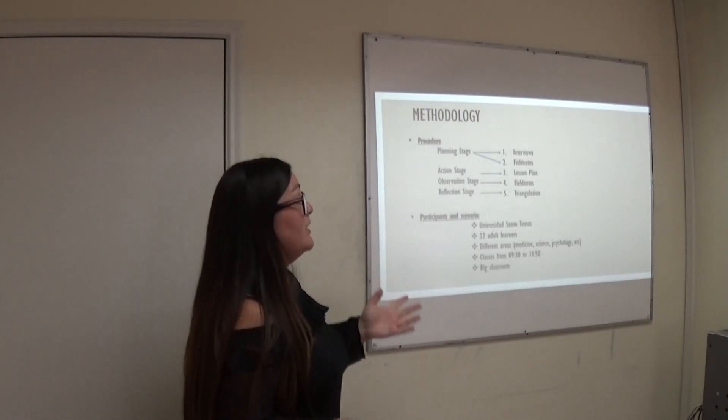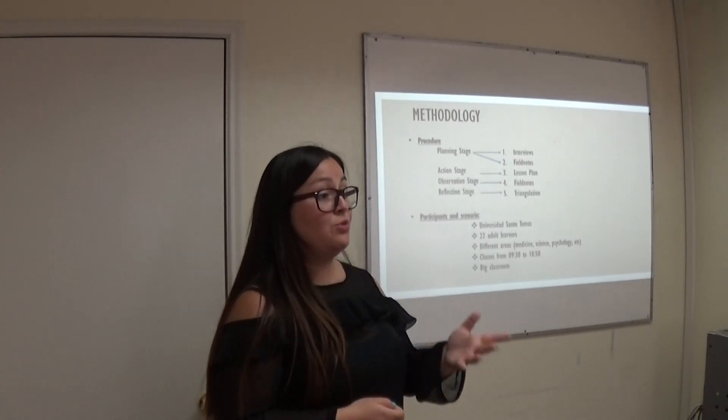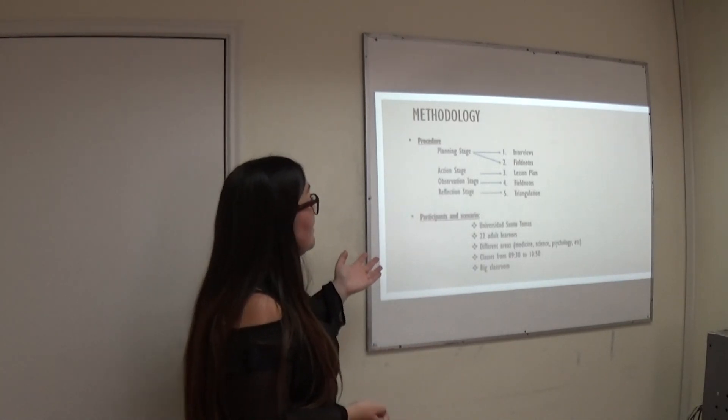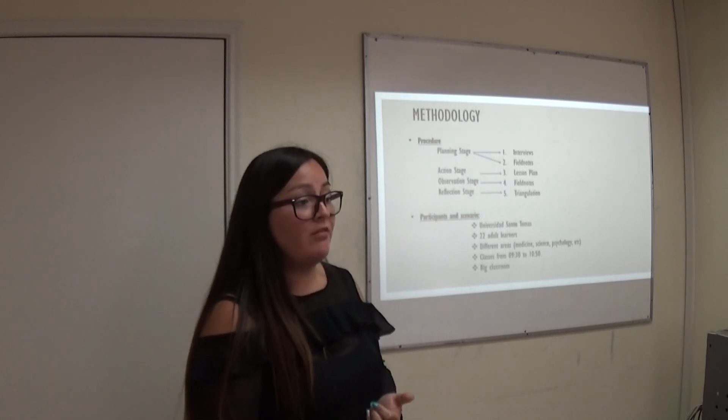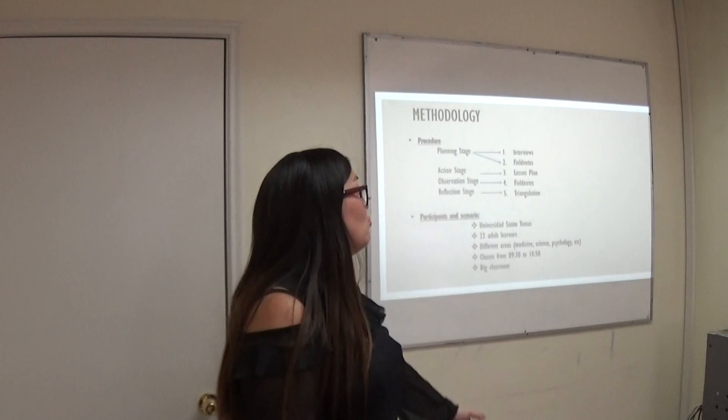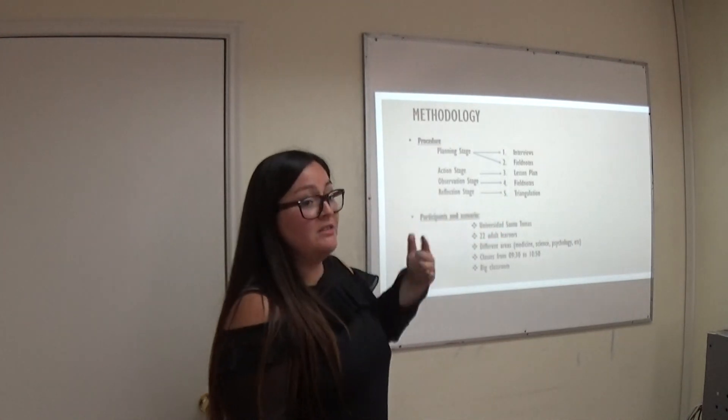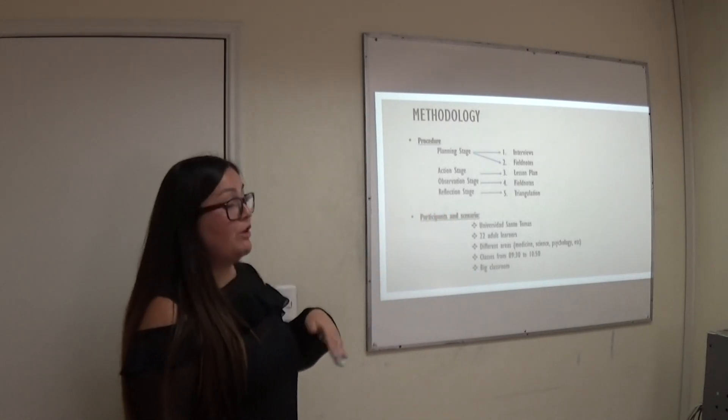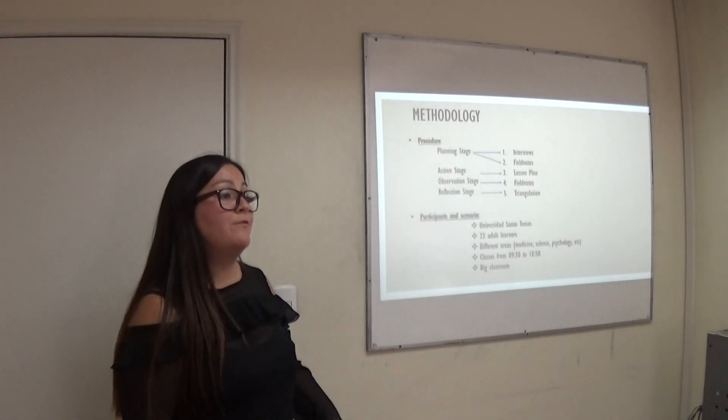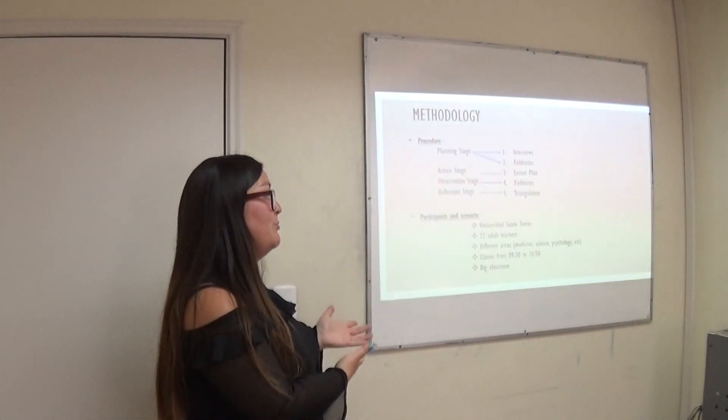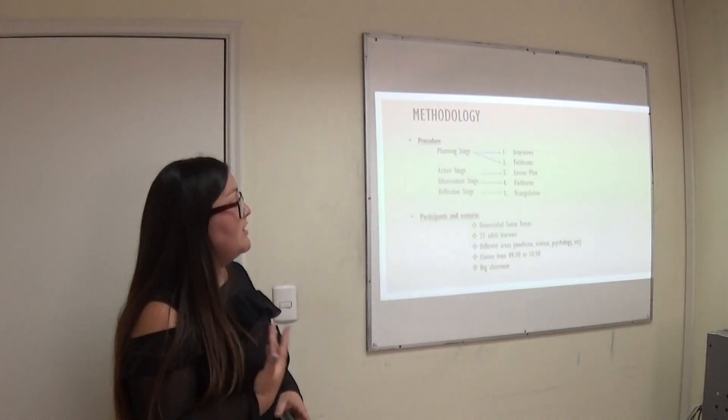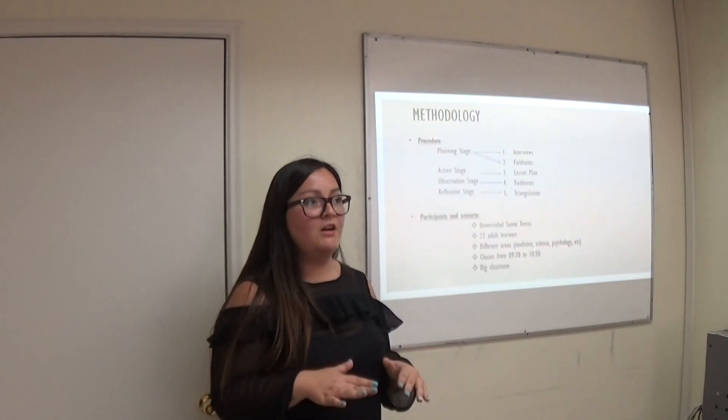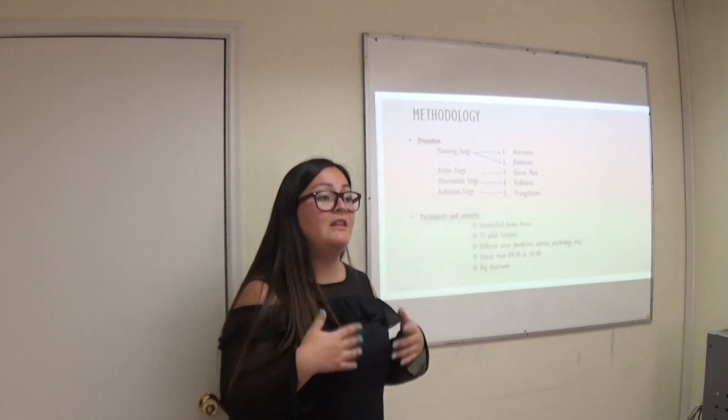For the planning stage, we have the interviews that were applied to all students. And we have field notes to observe and identify the problem. Because in the planning stage is where you identify the problem and prepare your action plan, which is the lesson plan. The action stage is the actual application of the action plan, which is the lesson plan. And then the observation stage, we used field notes to observe the impact of the action plan. Then for the reflection stage, we use a triangulation matrix. Because in the reflection stage, you observe and you try to find out if the action plan needs improvements.